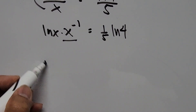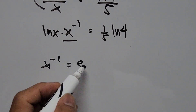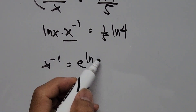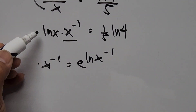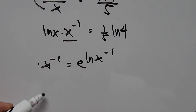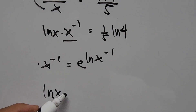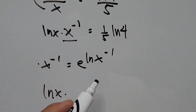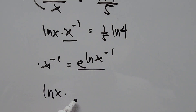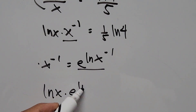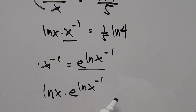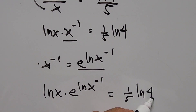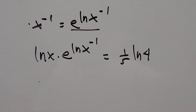Here, x to the power of negative 1 can be written as e to the power of ln of x to the power of negative 1. Substituting this into our equation, we have ln of x times e to the power of ln of x to the negative 1, which equals one-fifth ln of 4.